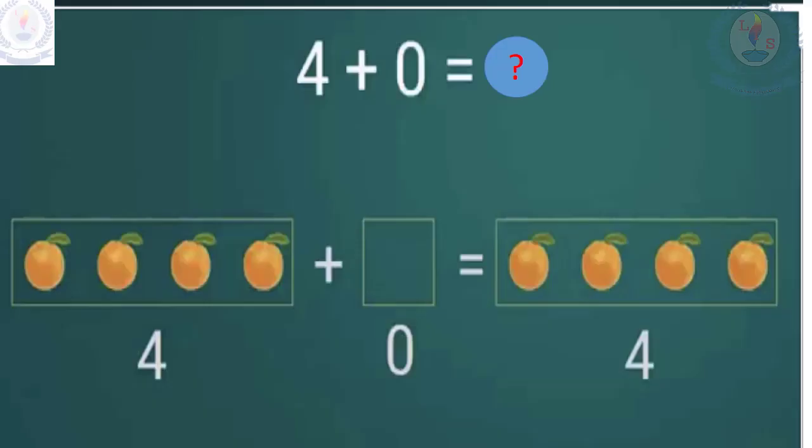This is another example for you. In the first box you can see some oranges. Count and tell me how many. One, two, three, four. Four oranges are in the first box. In the second one, can you see any orange? No oranges are there — zero oranges are there. Now tell me, how many oranges altogether? The answer is four.